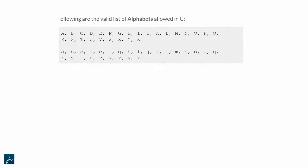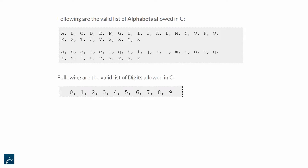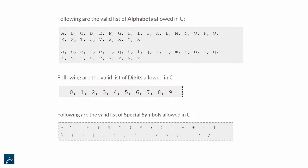These are the valid list of alphabets allowed in C programming: capital A to capital Z, and small a to small z. C allows usage of digits 1 to 9 along with 0. There is also a limited set of special symbols allowed in C.